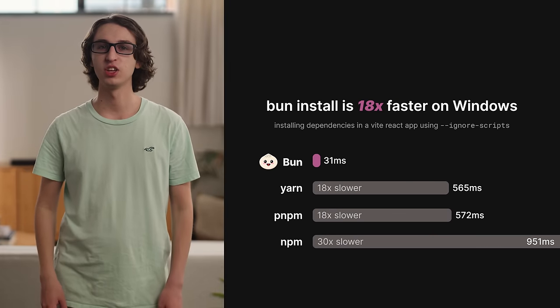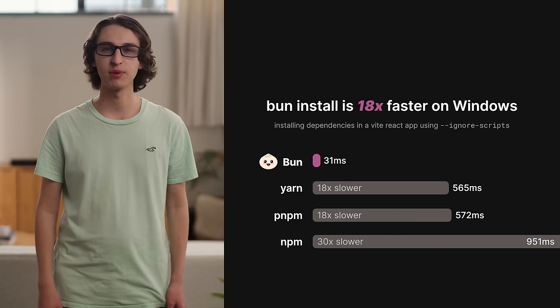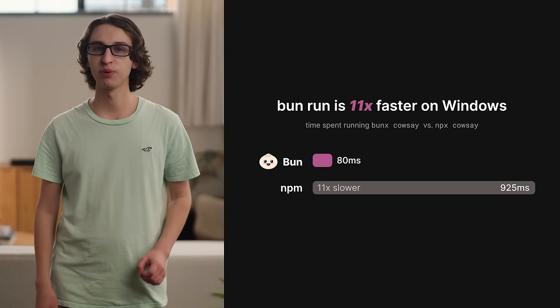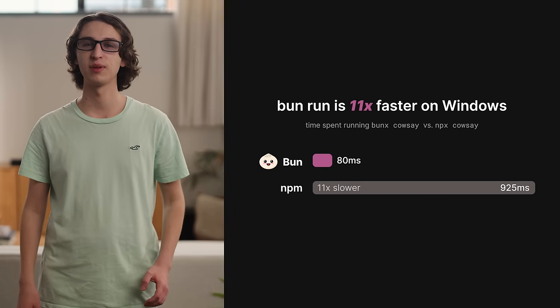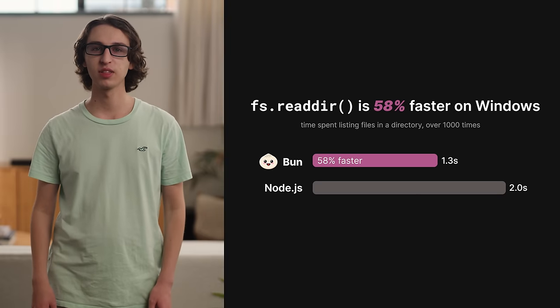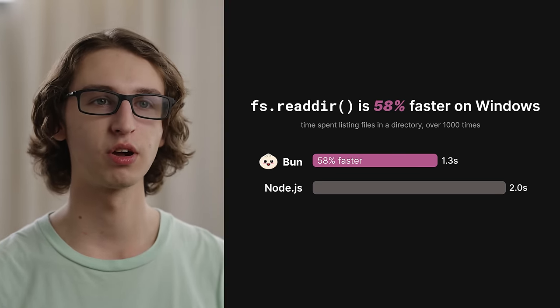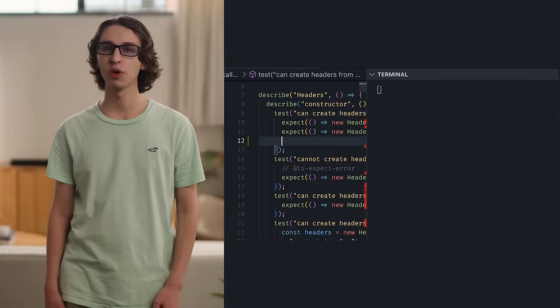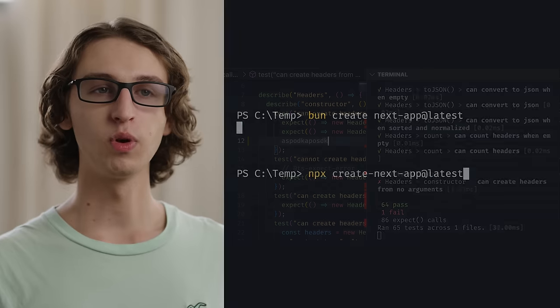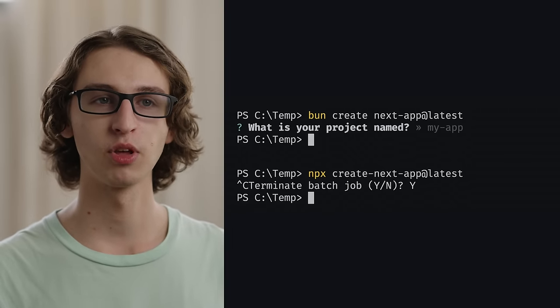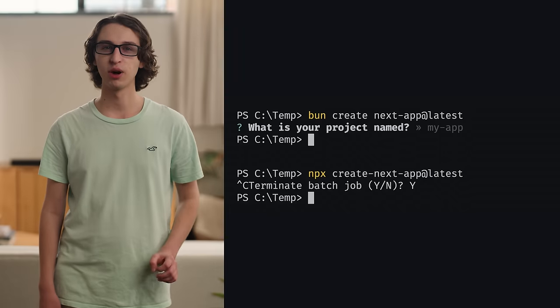We're really excited for Windows developers to see the speed and developer experience of BUN. BUN install is 18 times faster than Yarn and pnpm, and 30 times faster than npm on Windows. BUN run and BUN X are over 11 times faster than npm run on Windows. FS Reader is 58% faster on BUN compared to Node.js on Windows. Here, we're saving a file on each keystroke, and you can see how fast BUN is rerunning the changes to the test. We've also fixed that annoying terminate batch job prompt when you send Ctrl-C to the process — in BUN, this just works.